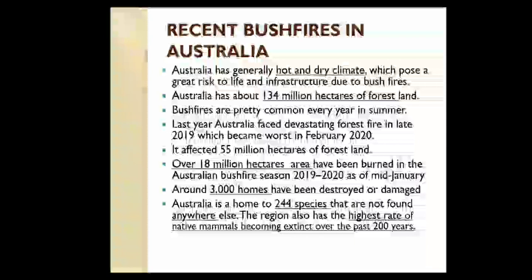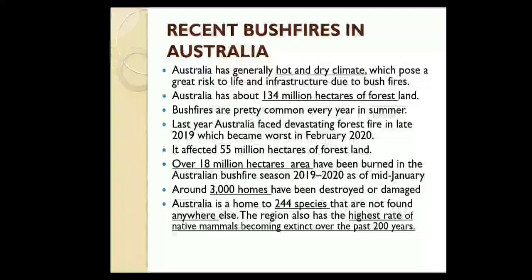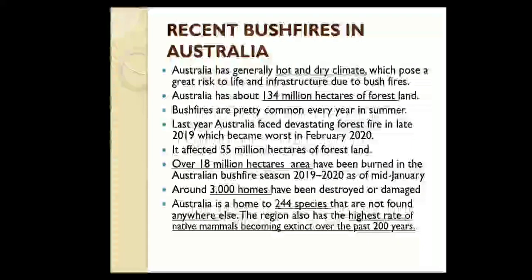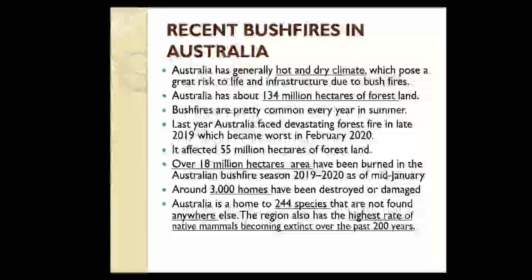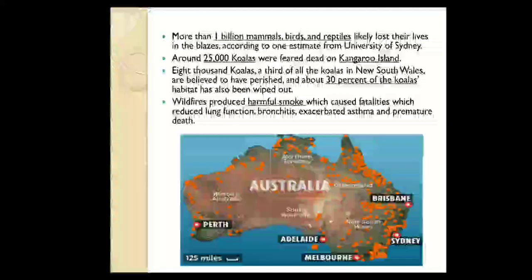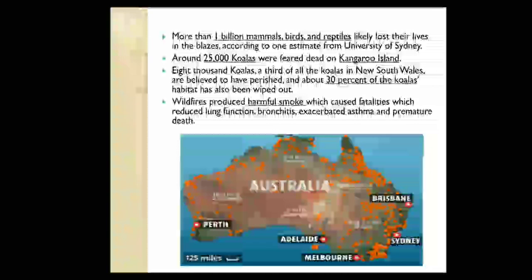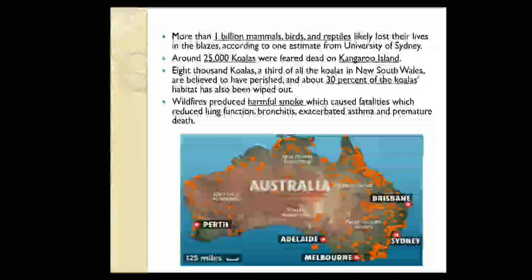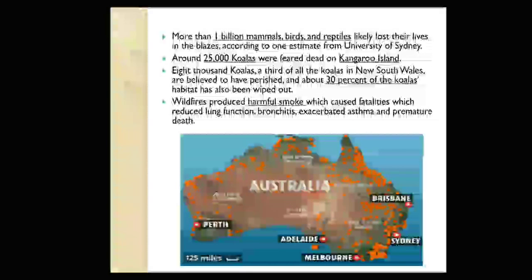Australia faced a critical situation due to bush fire. Australia has generally a hot and dry climate and has 134 million hectares of forest land. Bush fires are common every year in summer. Australia faced a devastating bush fire in late 2019, which became worst in February 2020. It affected 55 million hectares of forest land; over 18 million hectares have been burned and 3,000 homes were destroyed. More than 1 billion mammals, birds and reptiles lost their lives. 25,000 koalas died in Kangaroo Island and 8,000 koalas died in New South Wales. Harmful smoke caused several health problems like asthma and also caused premature death.